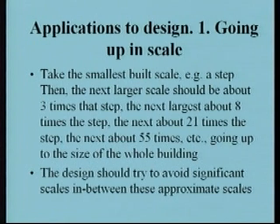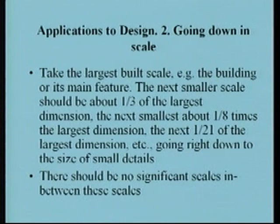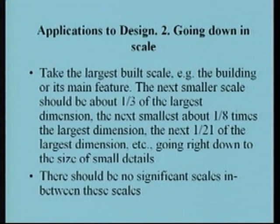The design should try to avoid significant scales in between these approximate scales. We all know of design that is too busy — too many things happening at many different scales — and we would like to avoid this as undesirable. Here is a corollary application, starting from the largest built scale — say the size of the building itself — and going down in scale. I use exactly the same numbers, this time dividing by those numbers to get the ratios.